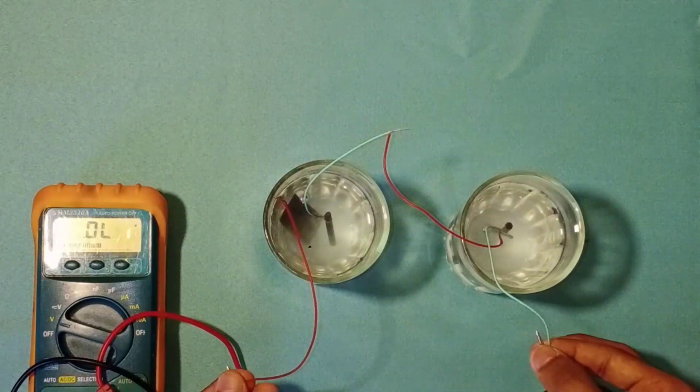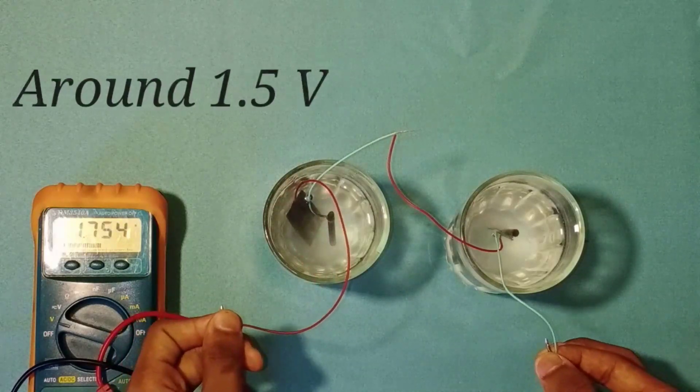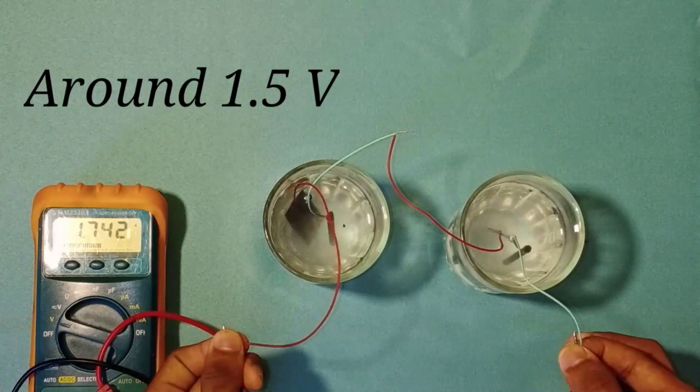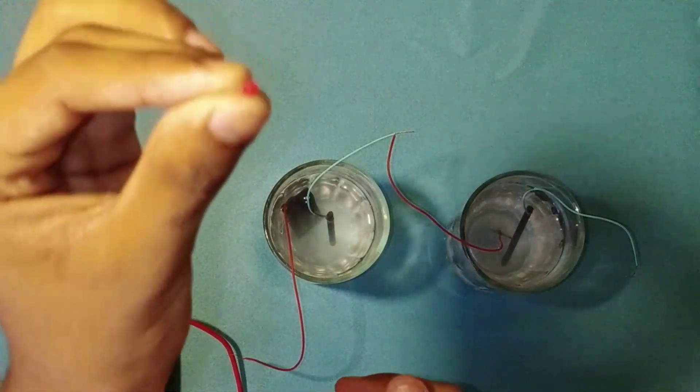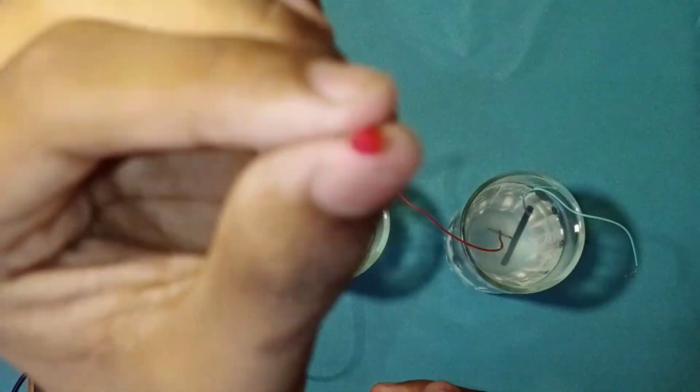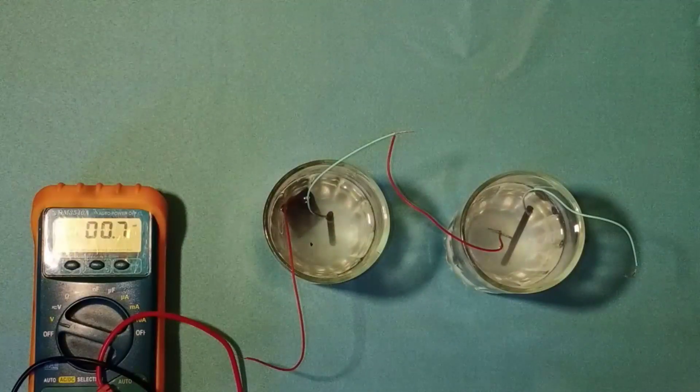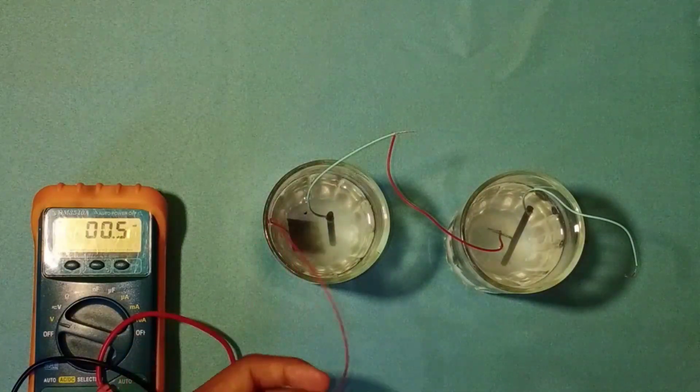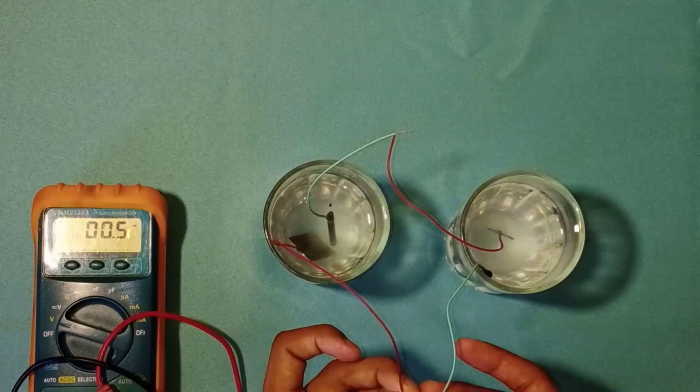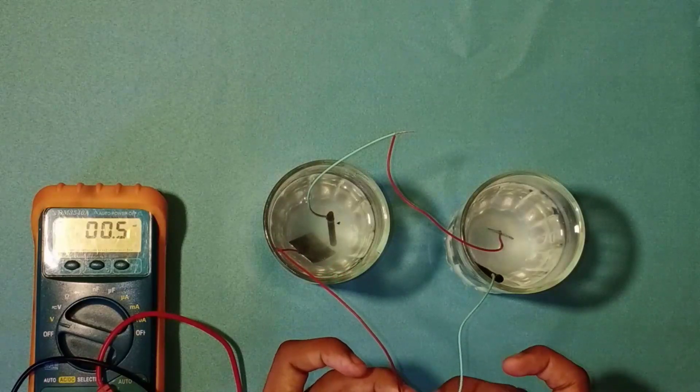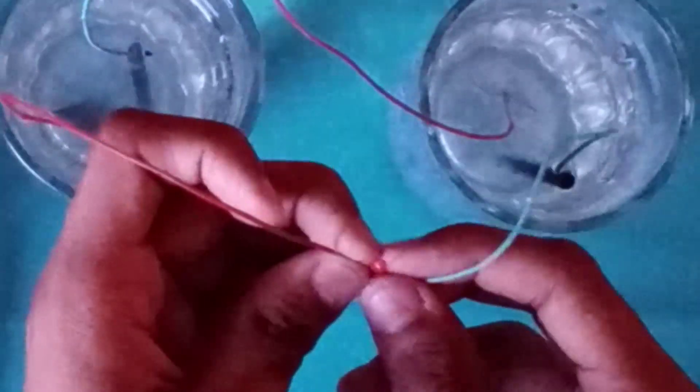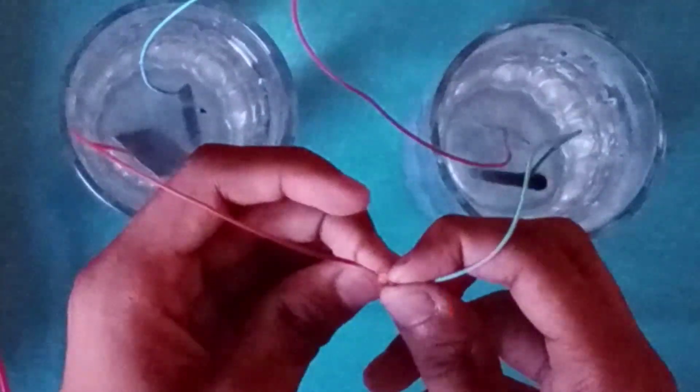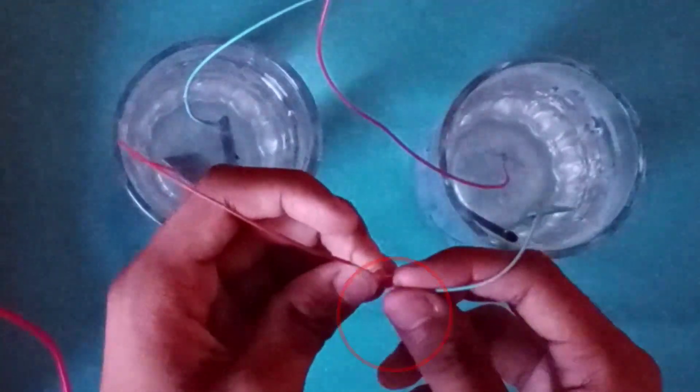Let's measure the voltage - it is around 1.5 volts. If we connect the LED to the wire, we can see the LED is glowing.